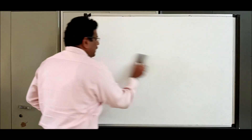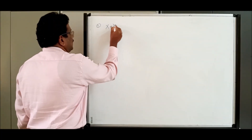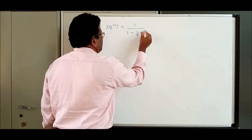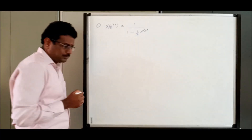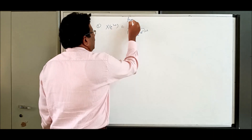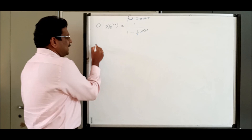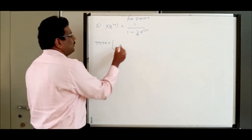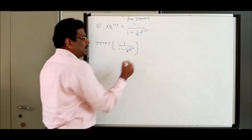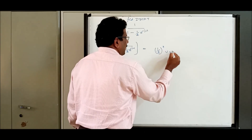Let us start a problem. What is x(e^(jω))? It is 1 by (1 minus 1/2 · e^(-jω)). Find the IDTFT. We apply the same formula: IDTFT of 1 by (1 minus 1/2 · e^(-jω)) gives the result 1/2^n · u(n).